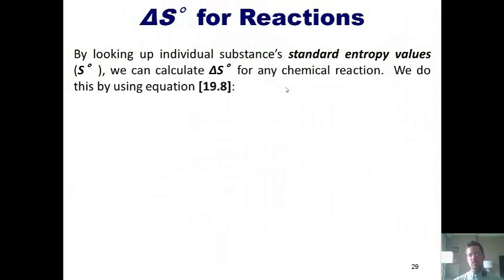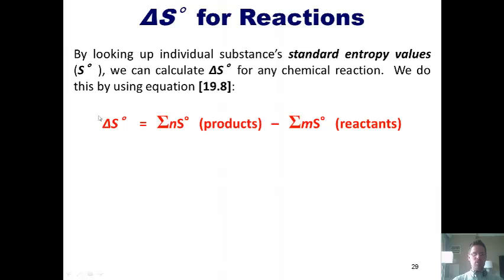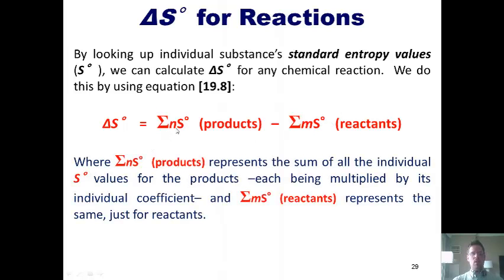By looking up individual substance's standard molar entropy values, or S°, we can calculate delta S° for any chemical reaction. We do this by using equation 19.8 from our text, which says, change in entropy equals the sum of the individual entropies of the products, minus the sum of the individual entropies of the reactants. Now, just so you know, N represents a coefficient in front of each entropy value of each product, and M represents the same for each reactant if there are any coefficients in front of them in the balanced chemical equation.